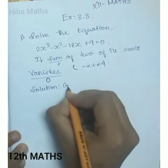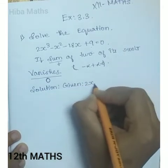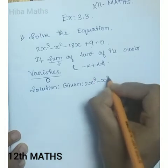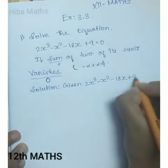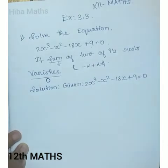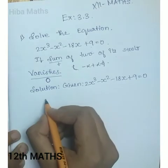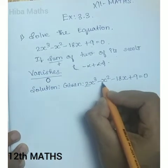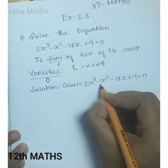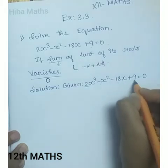Given: 2x³ - x² - 18x + 9 = 0. In this model, comparing with the standard cubic equation, a = 2, b = -1, c = -18, d = 9.